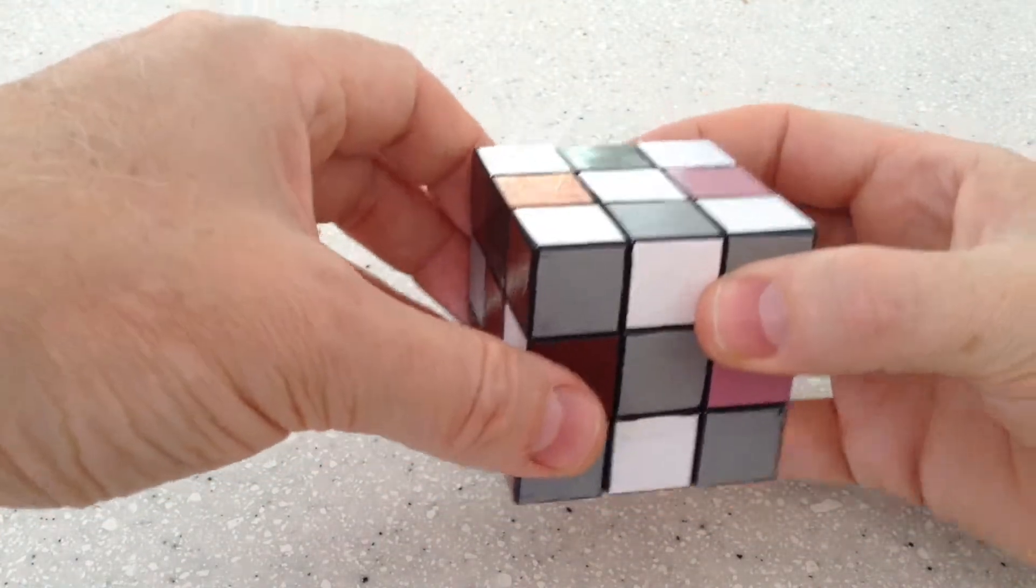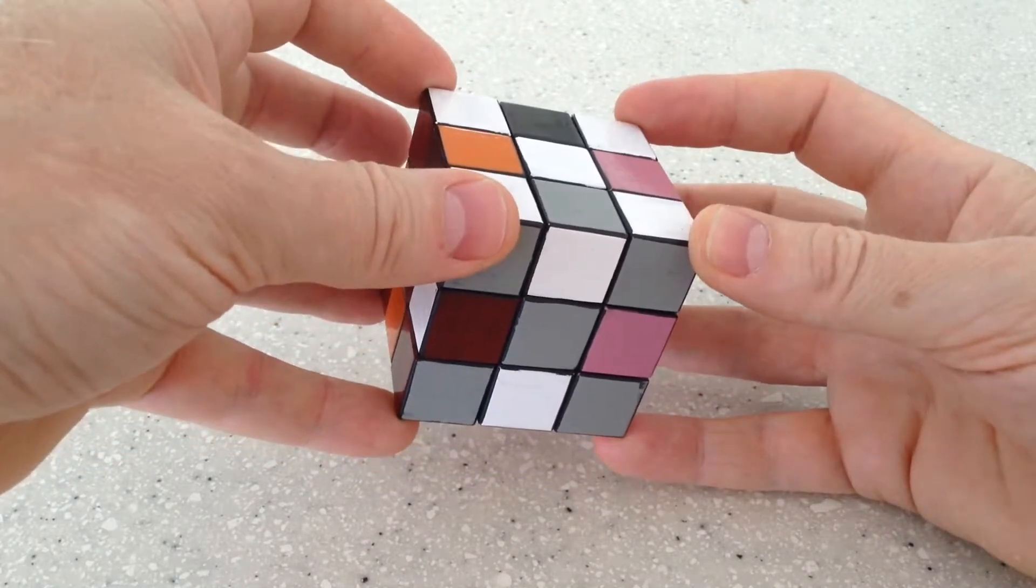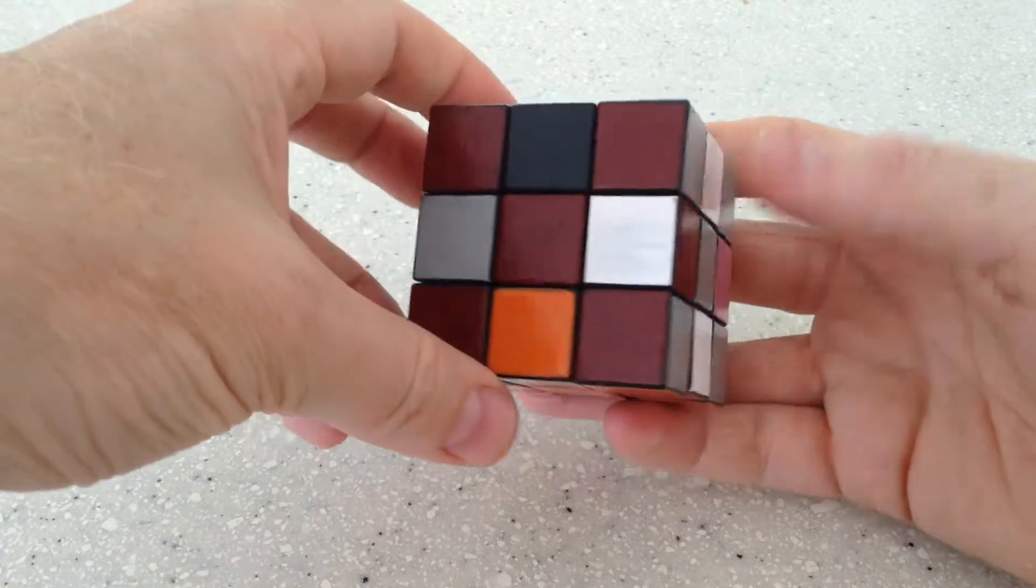So that is the first step. We have all the eight corners arranged. Correct position, correct orientation.